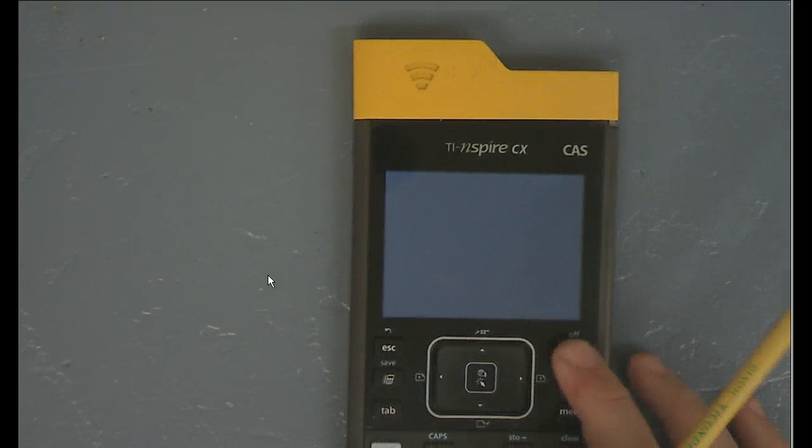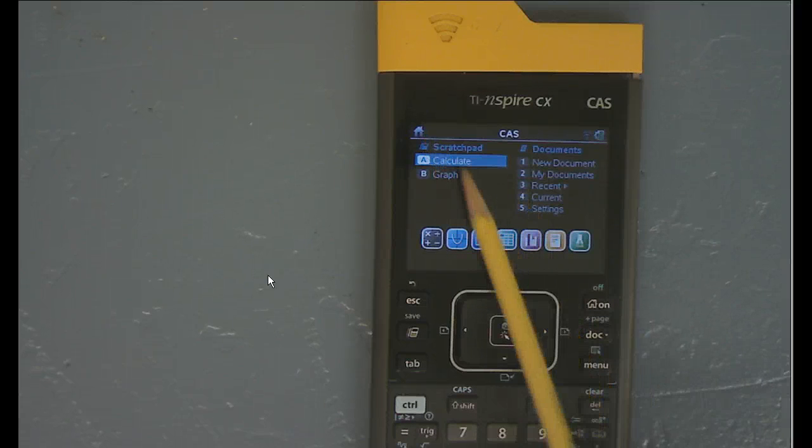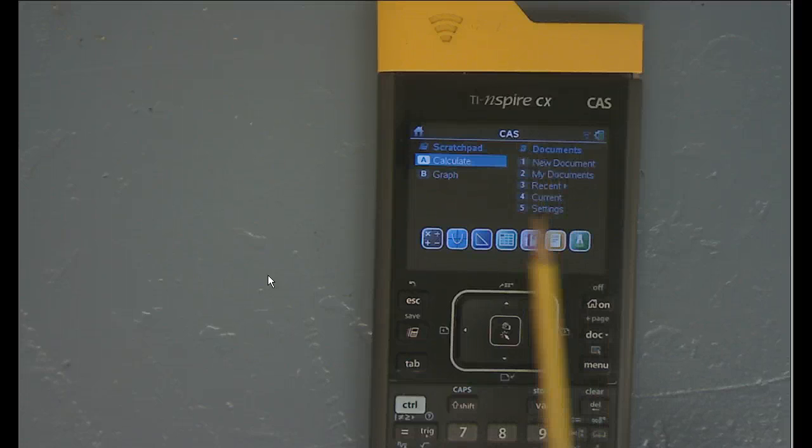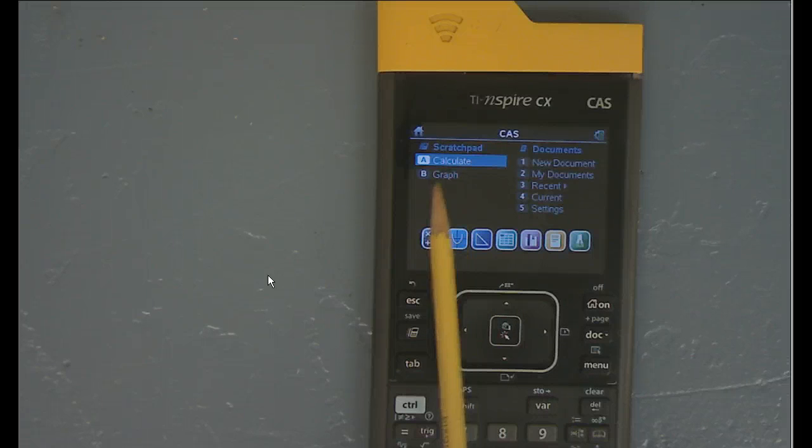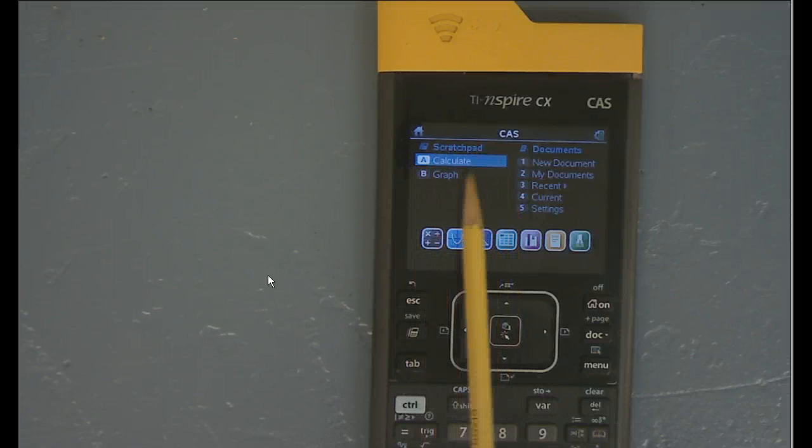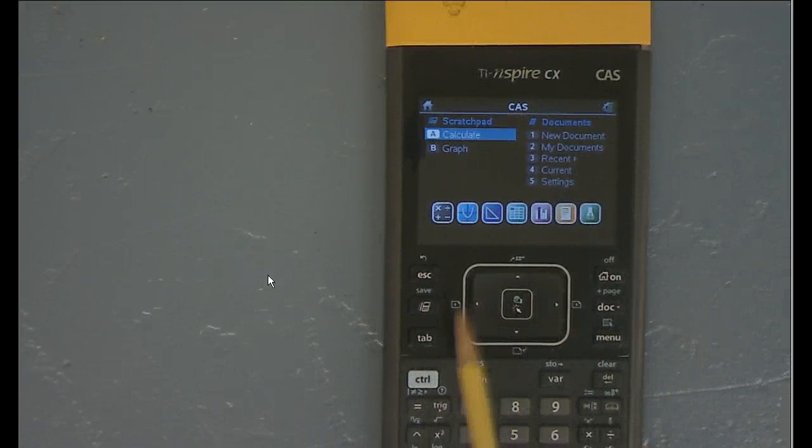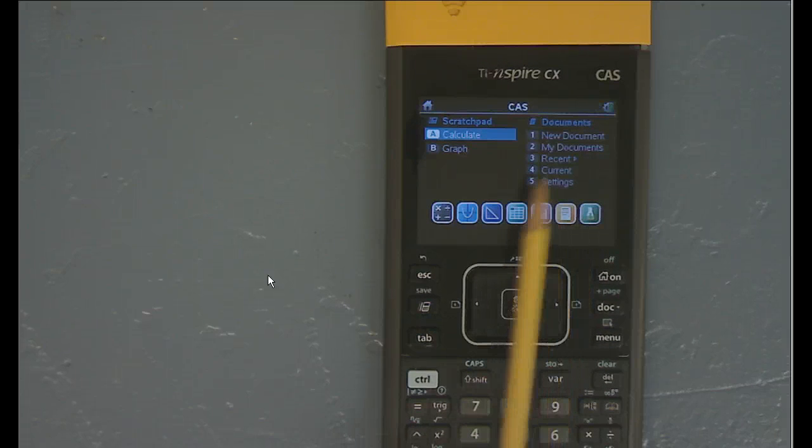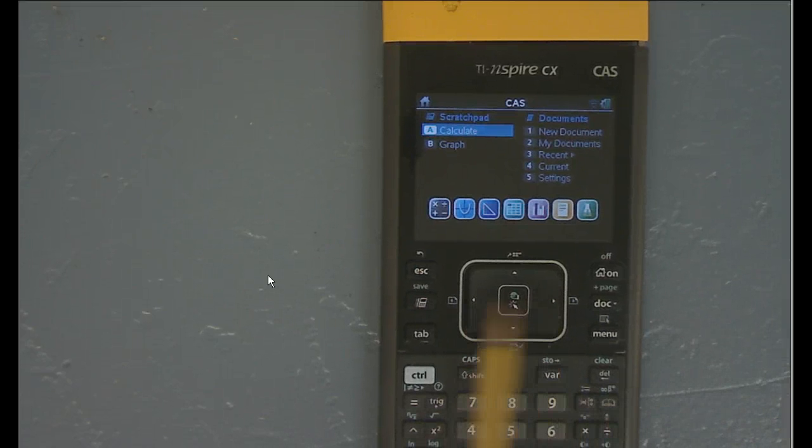We're going to turn it on by pressing that on home button. This is basically our home. On the left is called Scratchpad, on the right are documents. We're just going to use the Scratchpad, which is designed for you to do calculations without worrying about saving them. There's the Calculate screen, good for doing calculations, and the Graph screen, good for graphing. We're not going to graph today. Down here on the bottom are apps I'm not going to have you worry about right now. These left and right arrows move you over.